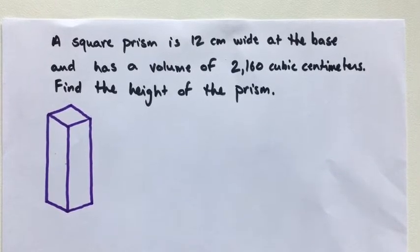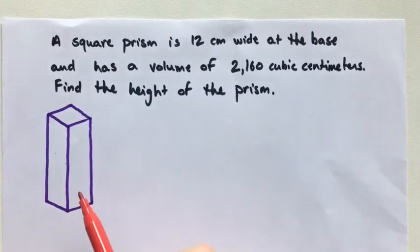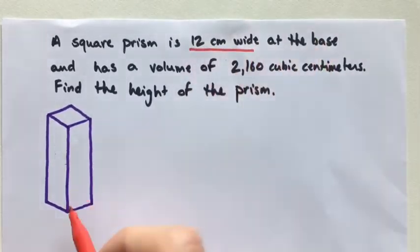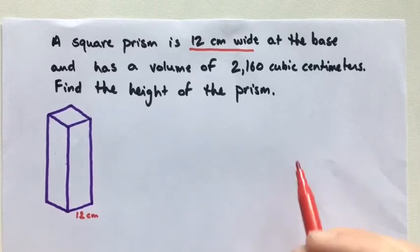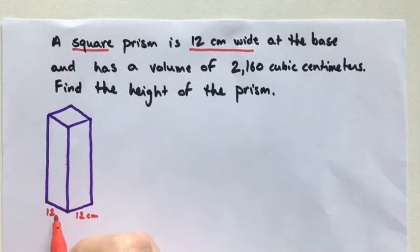So let's start off, let's see what we got. I've already drawn my square prism here. We know that its base is 12 centimeters wide, so this is going to be 12 centimeters. And because we know it's a square, we also know that this is going to be 12 centimeters.